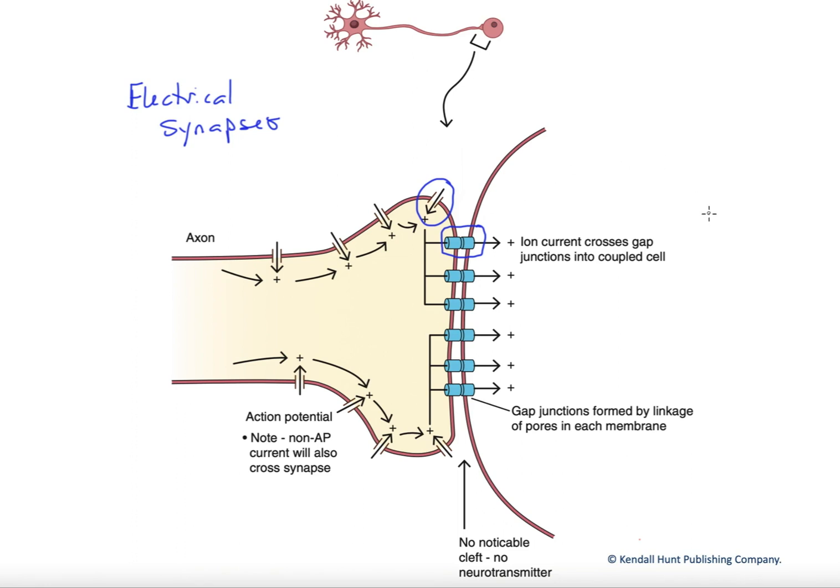And so one of the key attributes of electrical synapses is it allows coordination of large numbers of cells. And that's found not only in neural tissue, in the brain, but it's also found in cardiac muscle and sometimes smooth muscle, where we would like to coordinate the action of large numbers of cells to work together.